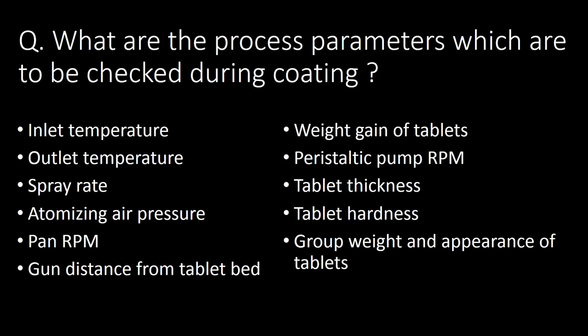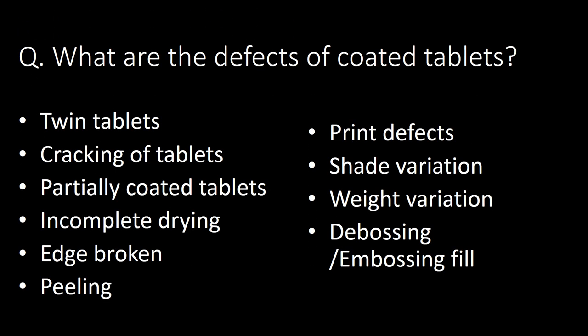What are the process parameters to be checked during coating? Ten important process parameters are: inlet temperature, outlet temperature, spray rate, atomizing air pressure, pan RPM, gun distance from tablet bed, weight gain of tablets, peristaltic pump RPM, tablet thickness, and gross weight and appearance of tablets.